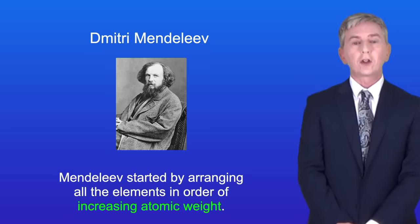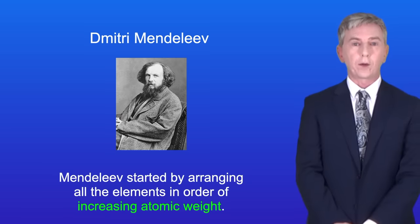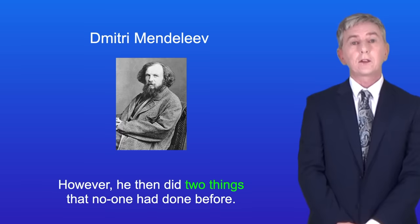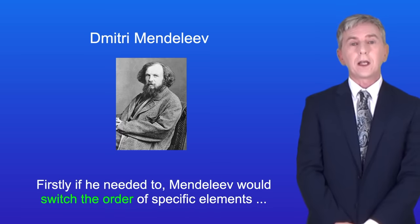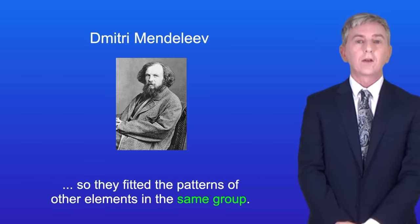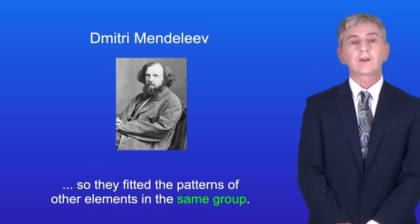Mendeleev started by arranging all the elements in order of increasing atomic weight. However, he then did two things that no one had done before. Firstly, if he needed to, Mendeleev would switch the order of specific elements so they fitted the patterns of other elements in the same group.